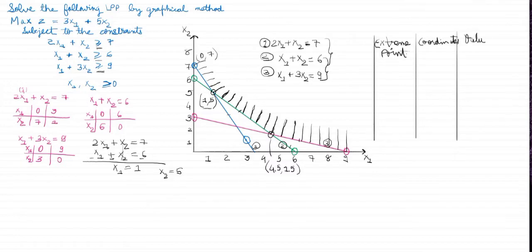Next, we'll make a table like this. Extreme point, coordinates, and value of the objective function. And what are our extreme points? These are the points of our feasible region. I already told that we'll label it as a, b, c, d. And the coordinates are: A is 0, 7. Then B is 1, 5. C is 4.5, 1.5. And D coordinates are 9, 0.